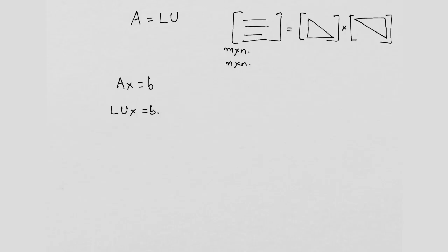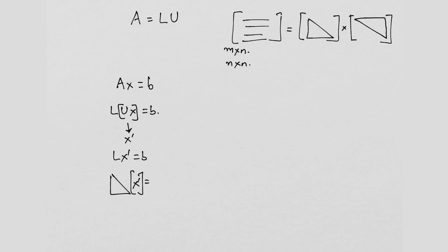What is x? x can be computed as follows. What is Ux? Ux is a vector — U is a matrix, x is a vector, so the matrix-vector product is a vector. Call this x prime. So this is nothing but Lx' = b. You can solve this because L is a lower triangular matrix times a vector x' equal to a vector b. This is easy to solve using back substitution.